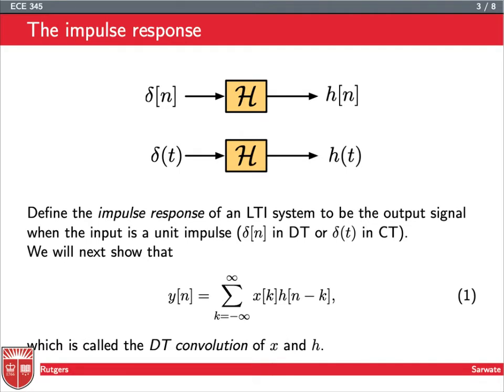Or in continuous time, we stick in delta of t, and whatever the output is, we're going to call that h of t. You can think of the system as being sort of like a bell — the delta of n comes in, you're hitting the bell, and you're asking, what does it sound like? What does the ring of the bell sound like? That's your h of n. Similarly, in continuous time, you can think of it that way as well.